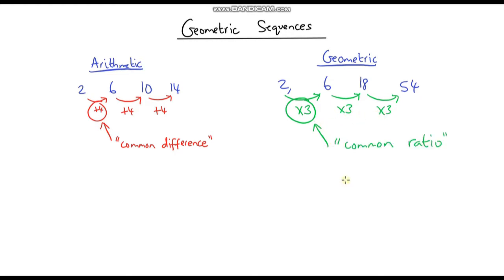In summary: in an arithmetic sequence we're adding or subtracting the same amount each time, which is called the common difference. In a geometric sequence we're multiplying or dividing by the same number each time, and that is called the common ratio.